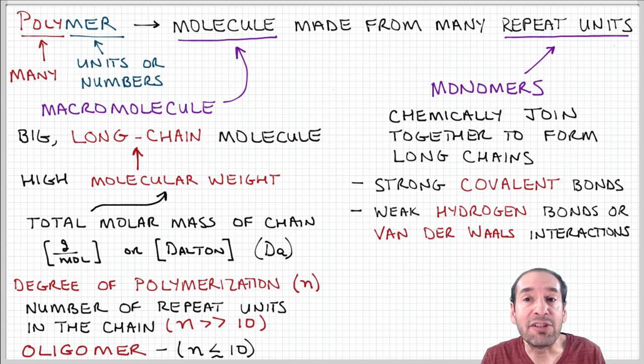In the case of DNA, it could be bases: adenine, cytosine, guanine, and thiamine. Or in the case of proteins, it's amino acids.